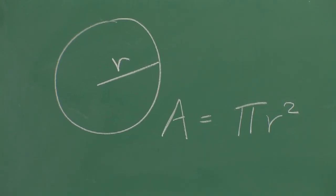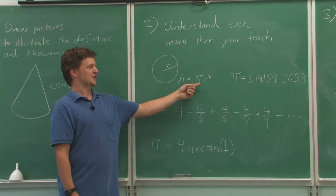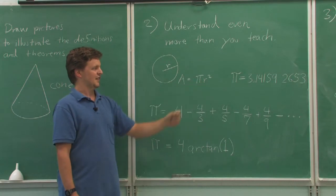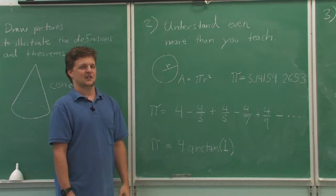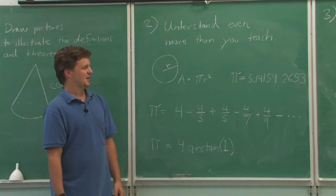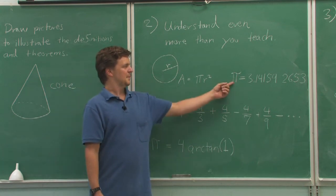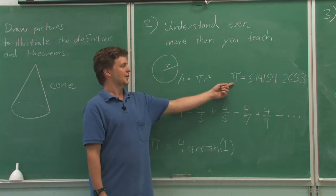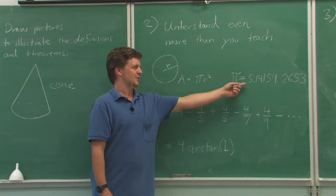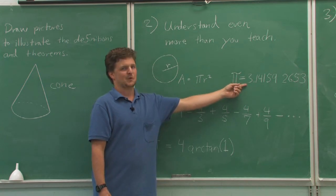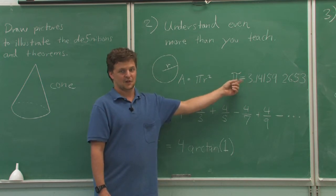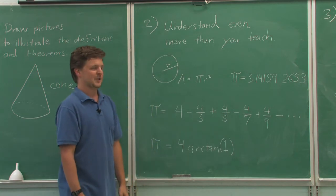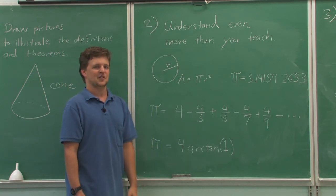For example, the area of a circle is equal to pi times the radius squared. And of course we need to know what pi is. Pi is this number, expanded out to nine places: 3.141592653. Of course, you don't need to tell all the places of pi, but it's good to know a few more than you actually tell.